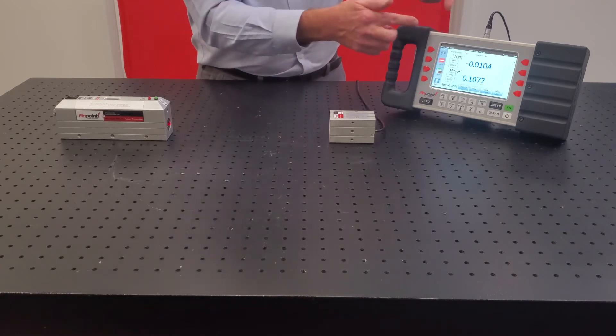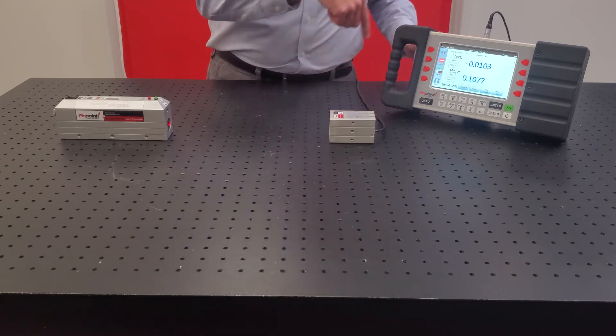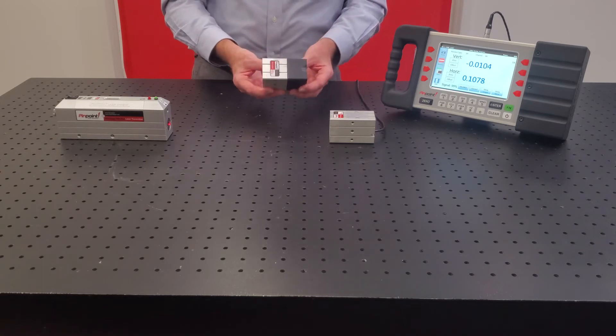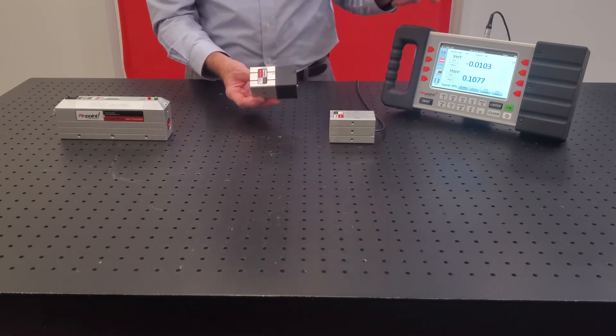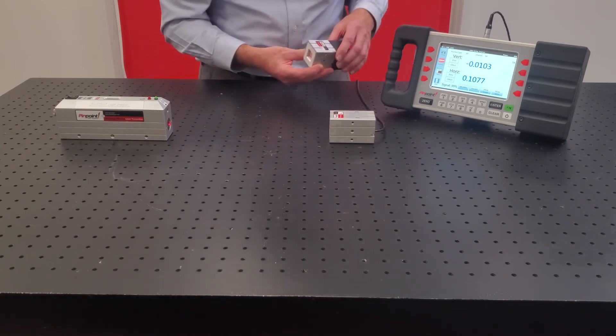The display unit can handle four wired receivers and then also can accommodate Pinpoint's line of wireless receivers which connect to the display without wires or connections for different factory environments.